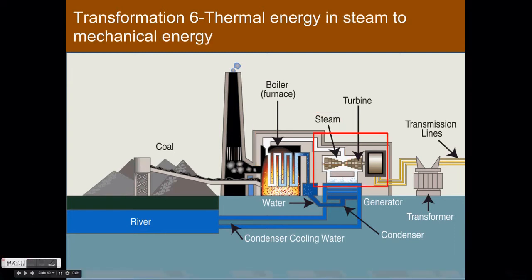Remember that thermal energy is defined as rapidly moving molecules. These molecules of the steam moving through this pipe are moving very fast. The high velocity steam pushes a spinning turbine. In transformation six, thermal energy in the steam — the moving molecules — transfers to mechanical energy in a spinning turbine.